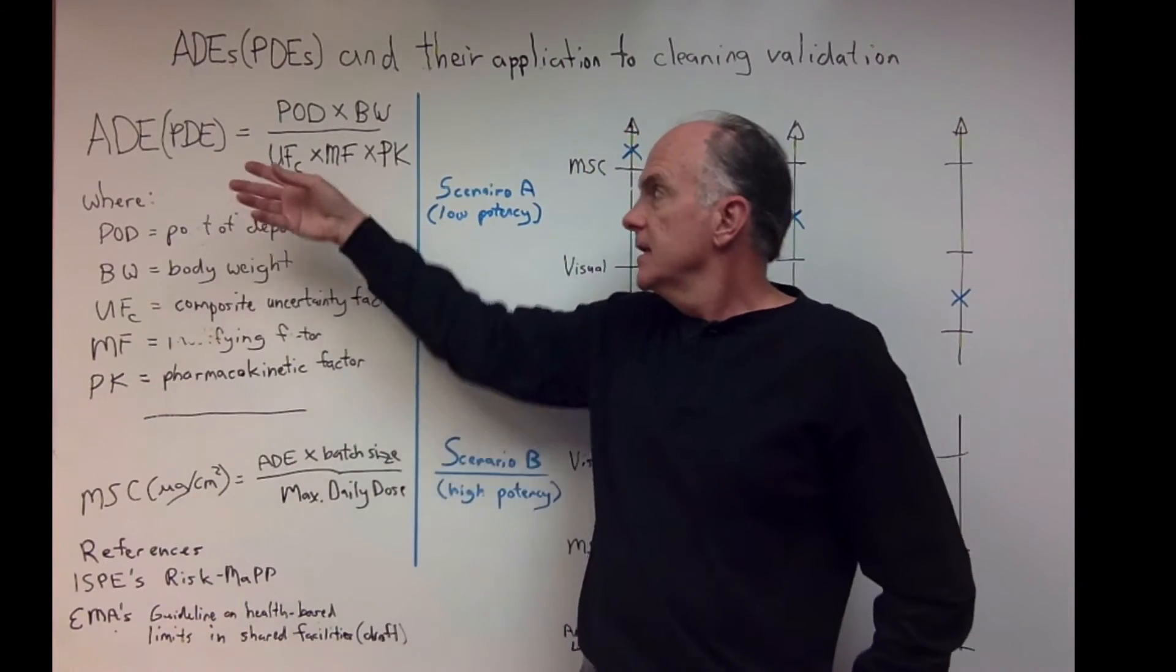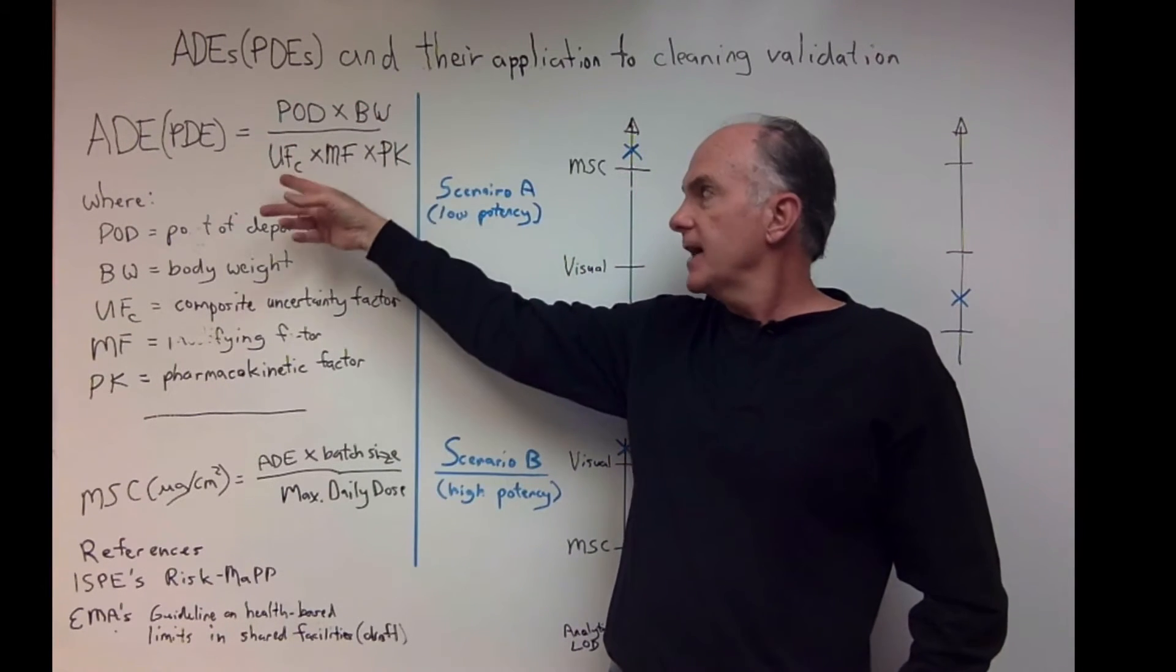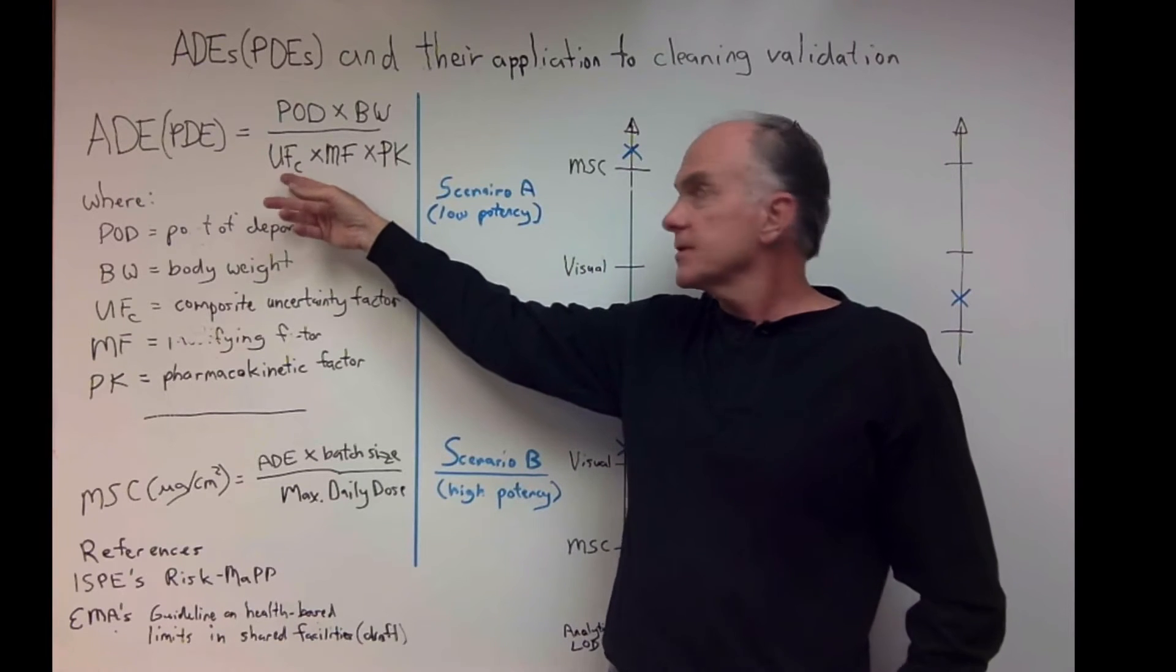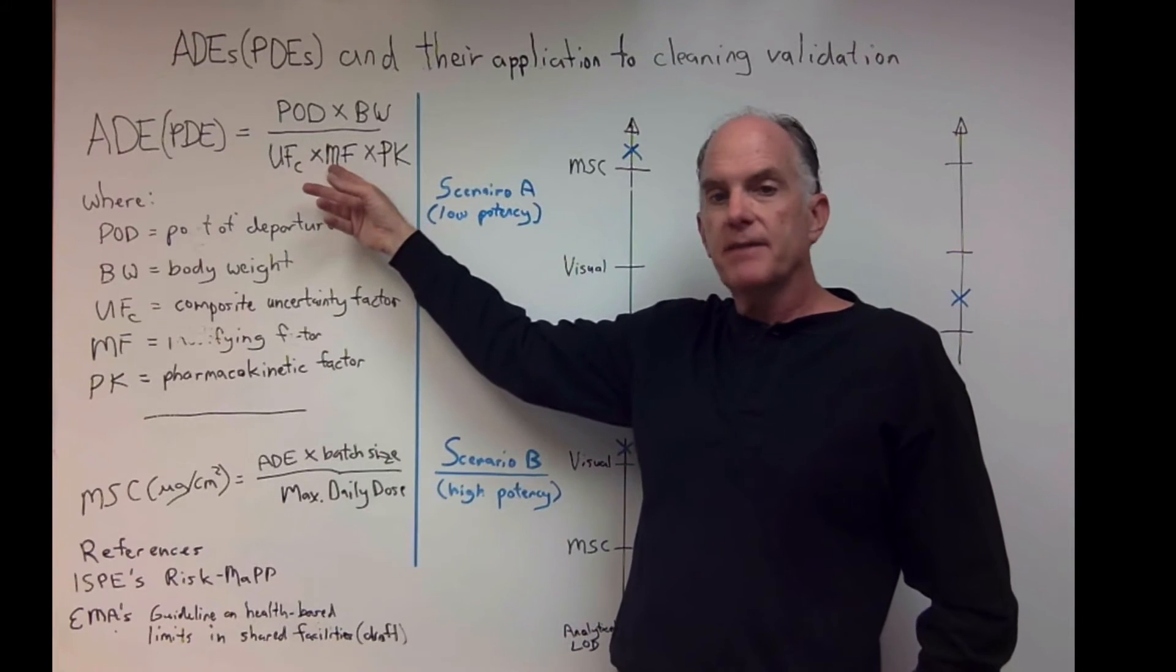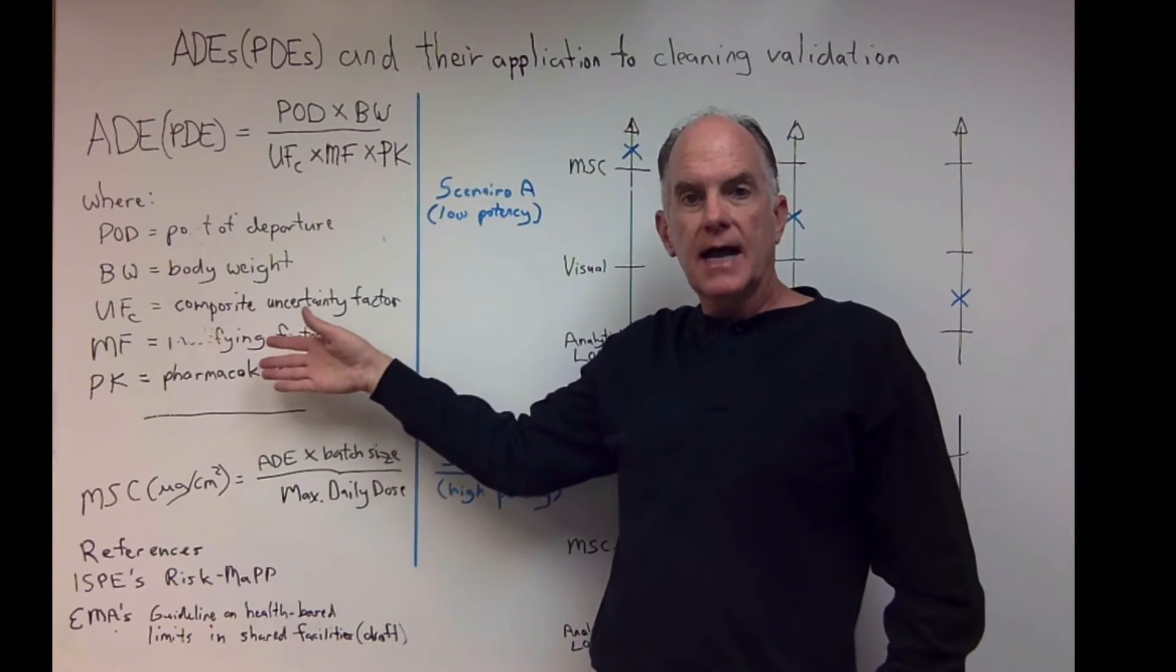So let's talk about what is an ADE. An ADE is the point of departure times the body weight divided by the composite uncertainty factor times a modifying factor times a PK factor. Here's what all the acronyms mean so you can look those up.